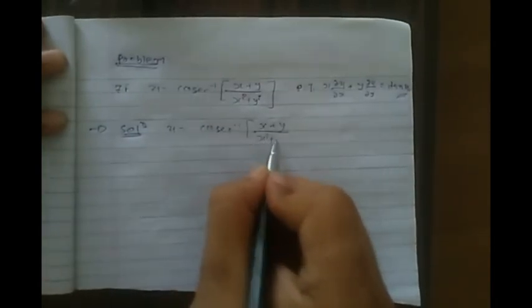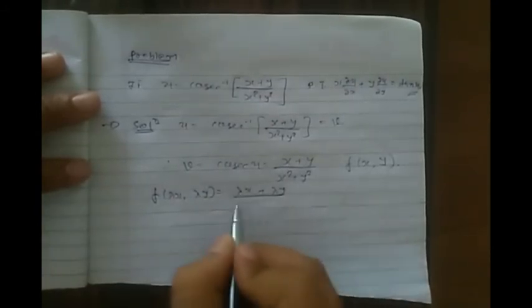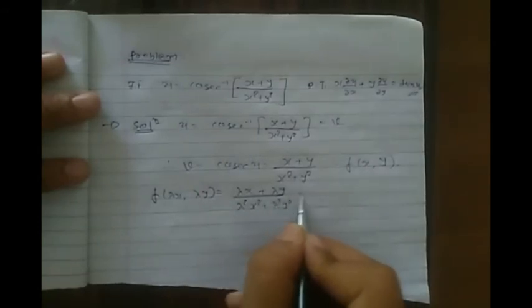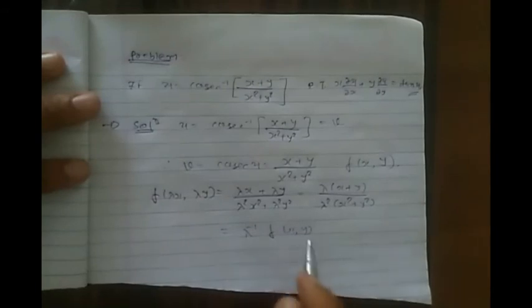Solution: u = cosec⁻¹((x + y)/(x² + y²)). Taking another variable v, we have v = cosec(u) = (x + y)/(x² + y²). To check homogeneity, compute f(λx, λy) = (λx + λy)/(λ²x² + λ²y²) = λ⁻¹ · f(x, y).